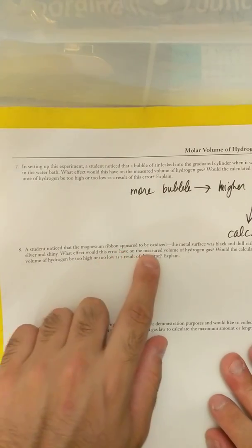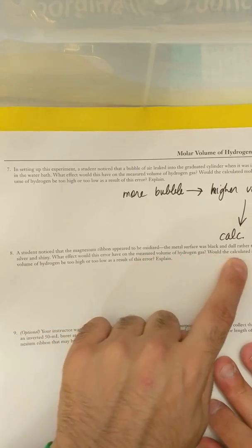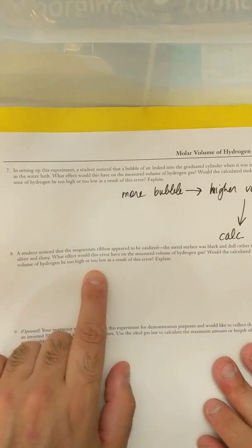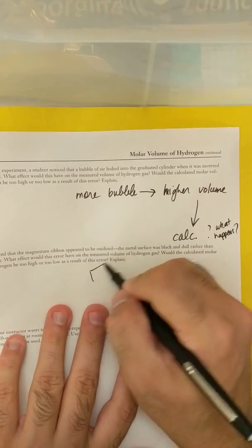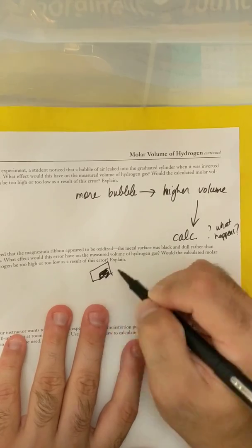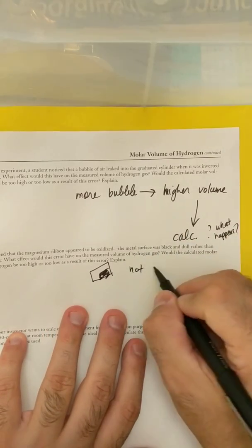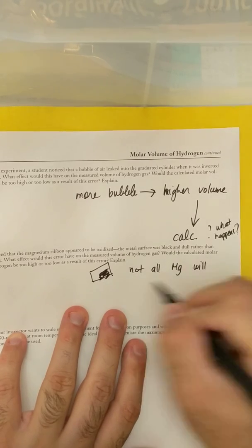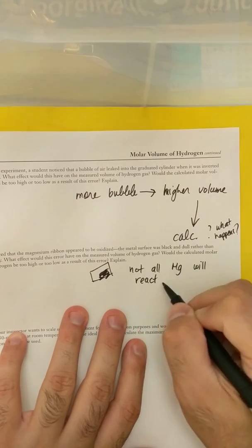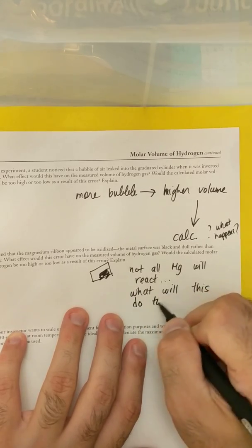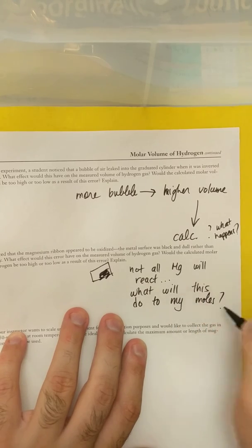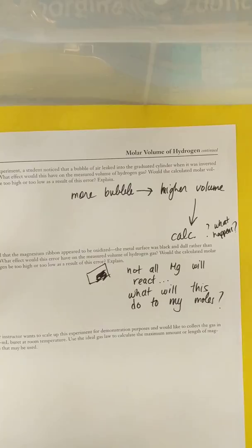It says the student noticed that the magnesium ribbon appeared to be oxidized. The metal surface was black and dull rather than silver and shiny. What effect would this error have on the measured volume of hydrogen gas? Well, if I have a magnesium ribbon that's a little bit oxidized, like it's a little black and not shiny, not all magnesium will react. So what will this do to my moles? I'm telling you it has to do with your moles. If not all of my magnesium reacts, what is this going to do to my moles?